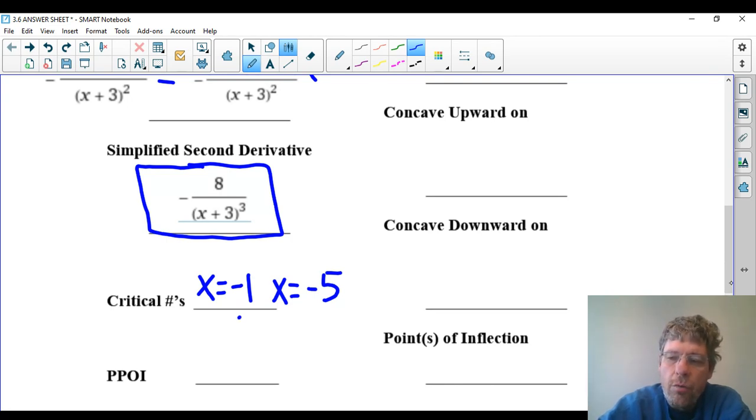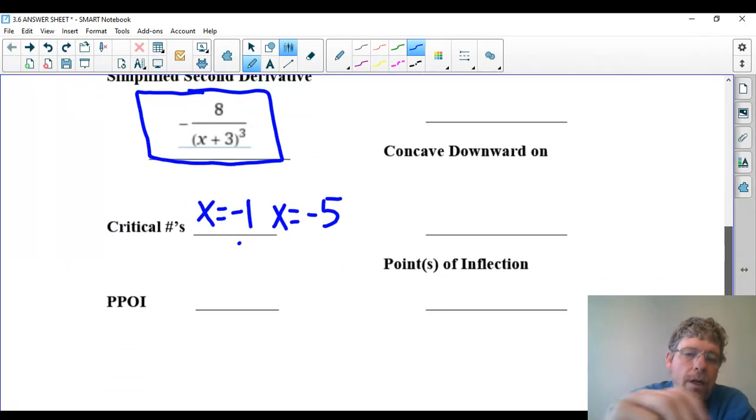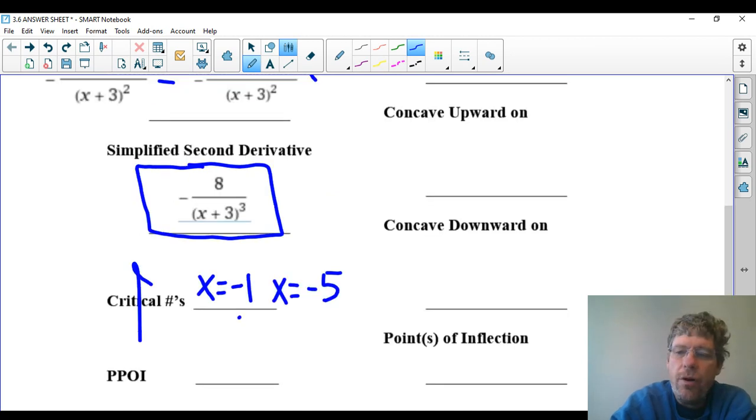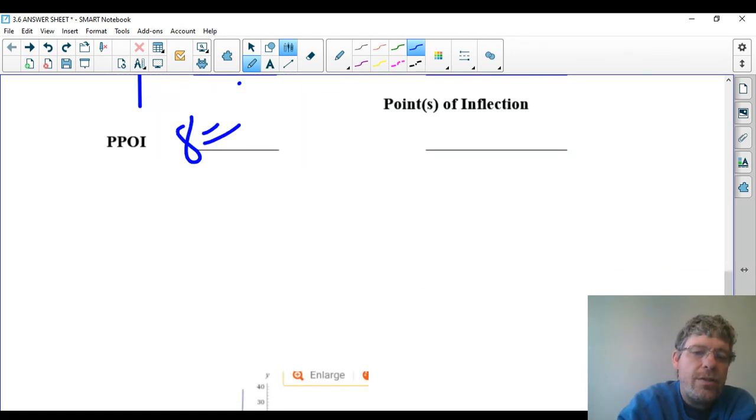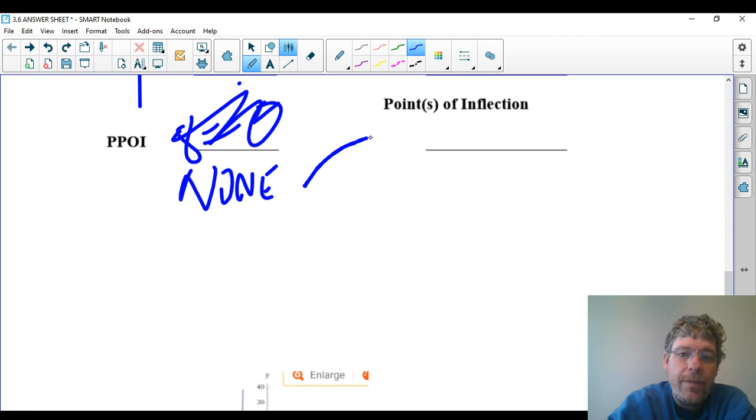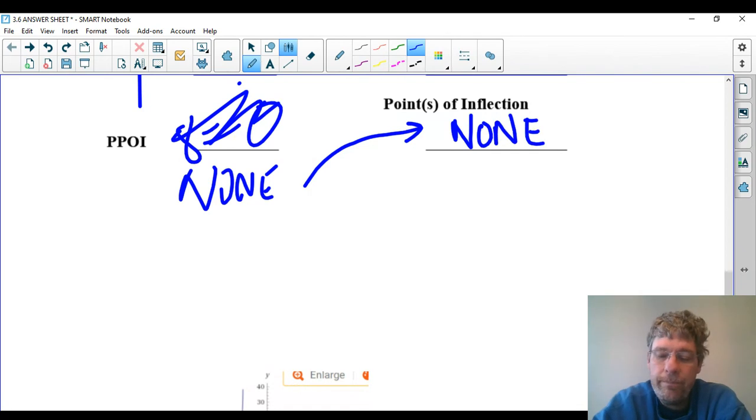The possible points of inflection are where the second derivative equals zero. So the bottom equals zero at negative three, so we don't have to worry about that. Again, that's a vertical asymptote. The top is eight. So you have to set the top equal to zero, which makes no sense because you'd say eight equals zero, which it doesn't. So that just means there's no possible points of inflection, which obviously, see right next to it, the points of inflection? Well, I'm going to write none right now. If there's no possible points of inflection, I don't think we're going to find any points of inflection.